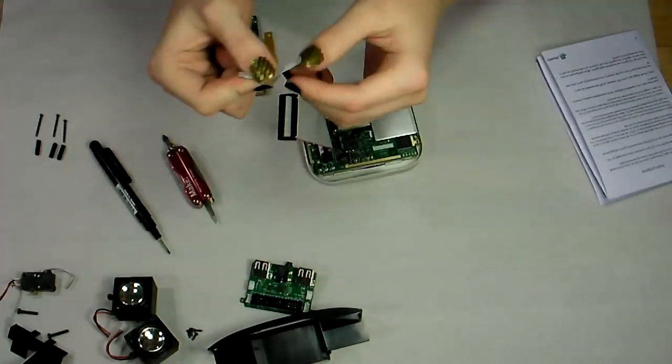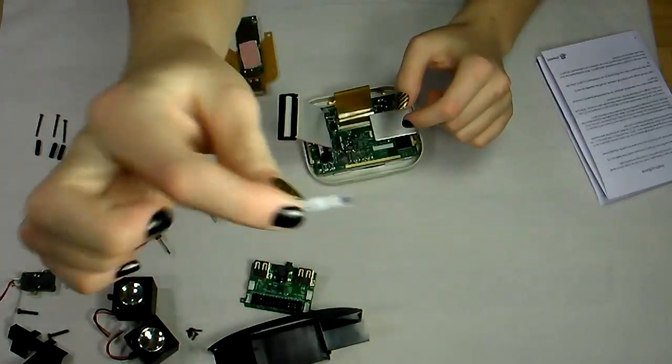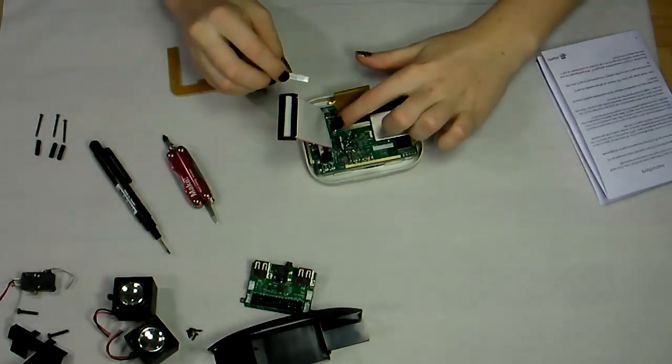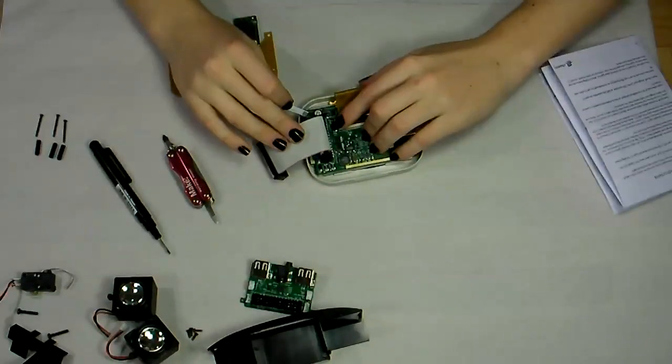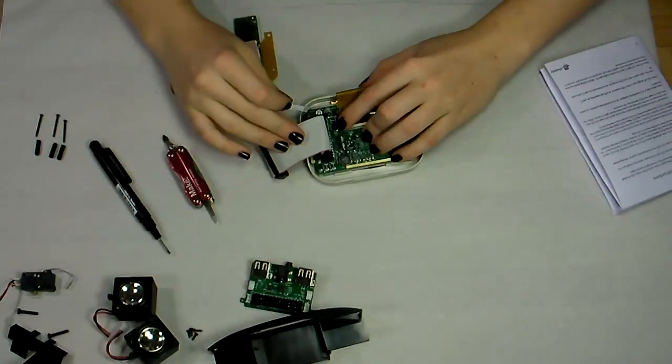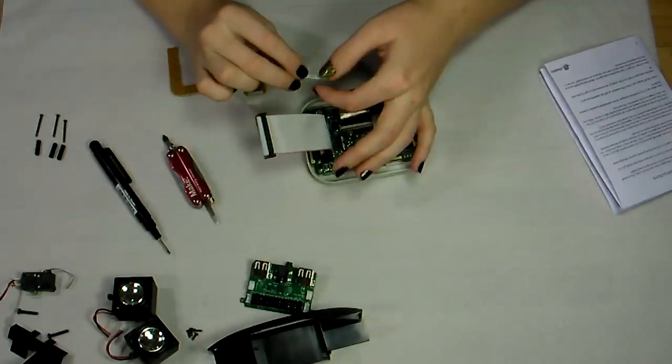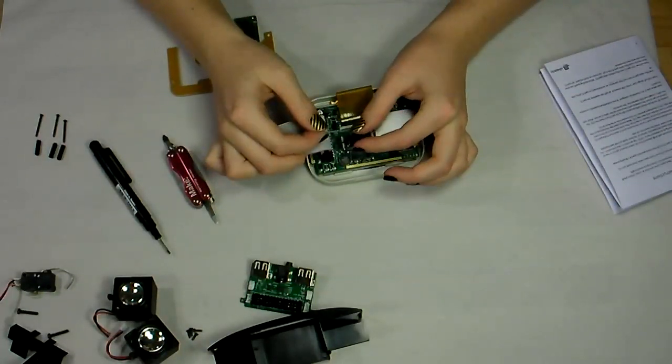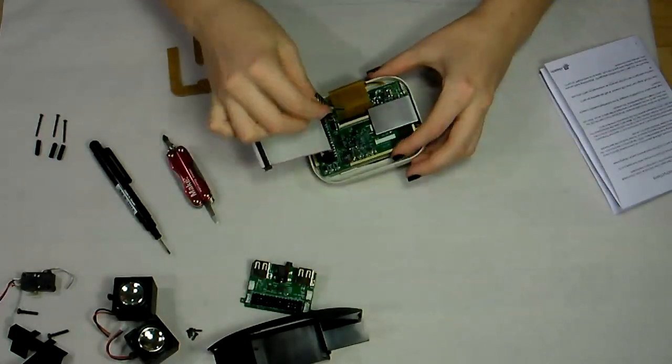Next, insert this 4-pin flex connector with the shiny little tabs into the motherboard. You can tell which way it goes because one side of the connector has silvery contacts on it, and those should line up with the silvery contacts on one side of the flex connector.